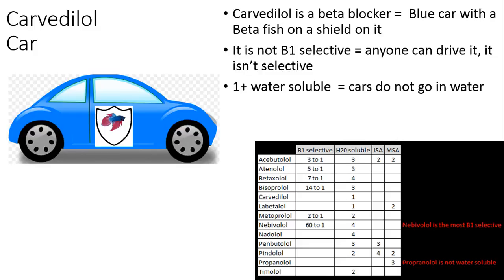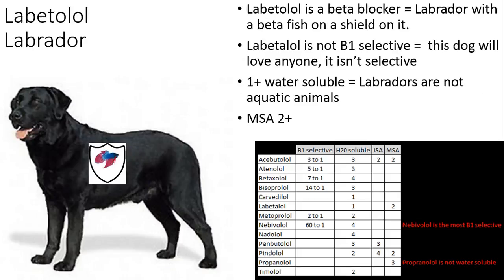Now we have carvedilol. Here is a car — it's a blue car, B for beta — so I chose a blue car. It is not beta-1 selective, so think of this as one of those loner cars that anybody can drive; it's not selective, anybody can drive it. This is one of the only two that is only one-plus water soluble, and just think you don't usually want to take cars in water. Now we have labetalol — 'labet' kind of sounds like labrador, so here is a black lab with a fish shield on it.